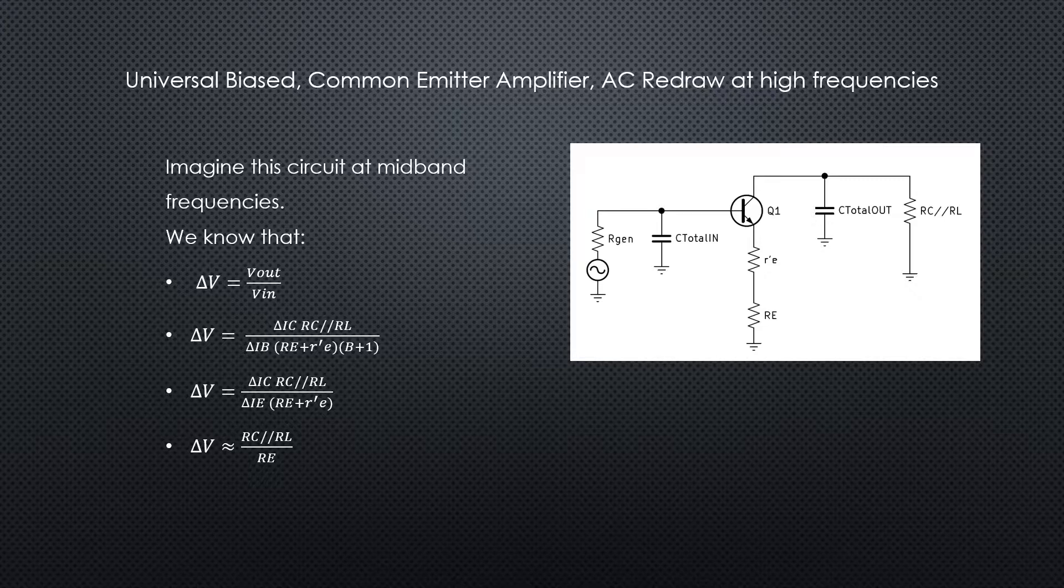Now if we take ib and multiply that by beta plus one we get ie, and we know that ic over ie is alpha and it's pretty close to one. Also, we generally know that r prime e is kind of a small number.